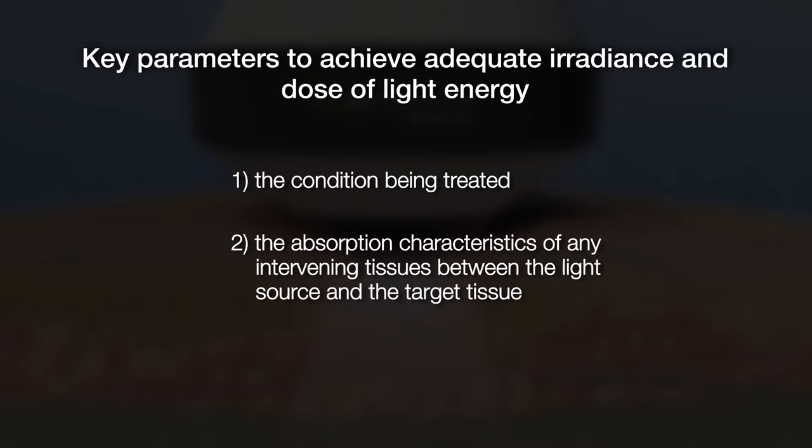There are three key parameters to consider to achieve adequate irradiance and safely deliver an effective dose of light energy to target tissue: one, the condition being treated; two, the absorption characteristics of any intervening tissues between the light source and the target tissue; and three, the mechanism of delivery.